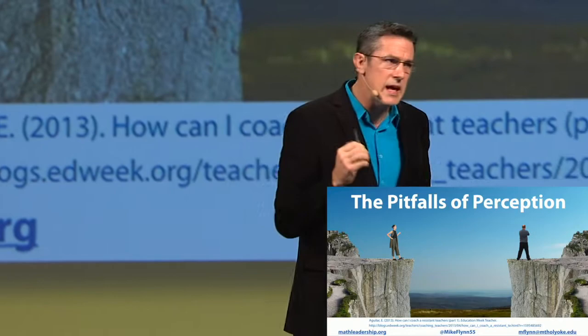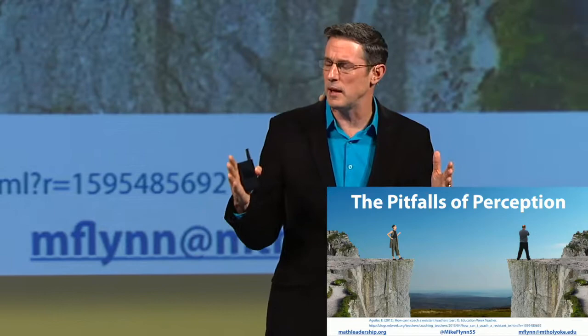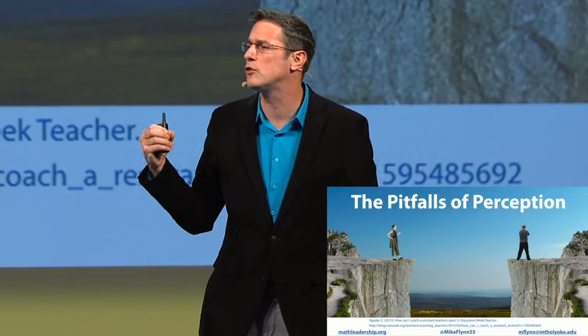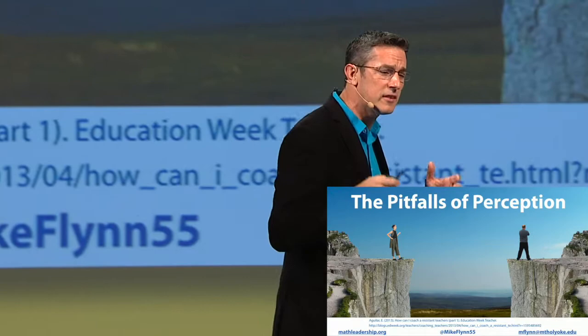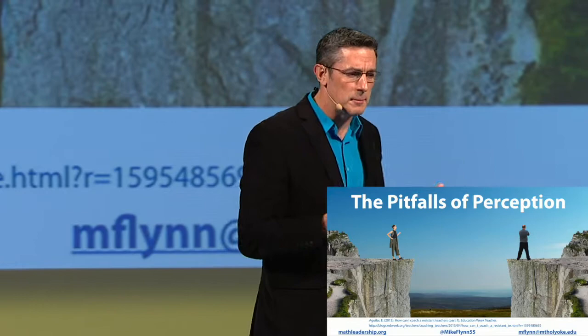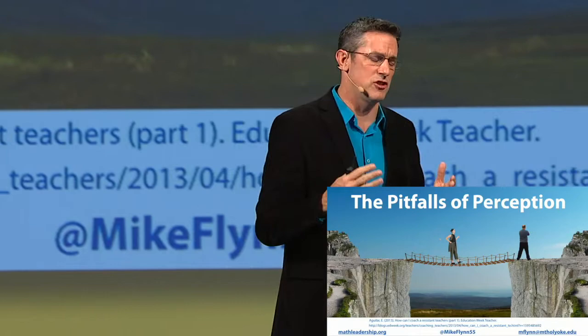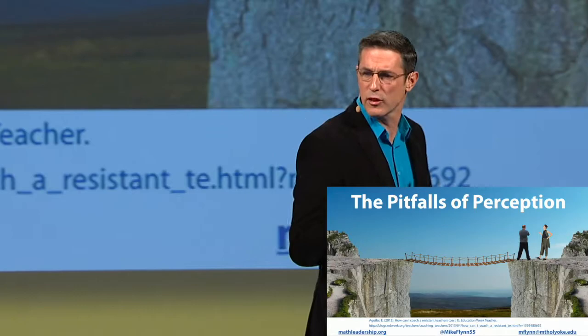Elena Aguilar talks about this idea of the pitfalls of perception. She actually says that when we call someone a resistant teacher, we've already set a divide between the two of us — and we're no longer in a working space with that person because we've labeled them. The same way we don't say a student in class is a 'problem student' — we say it's a student who's exhibiting challenging behavior. So we could flip our narrative with these teachers and say it's a teacher who's exhibiting resistant behavior.